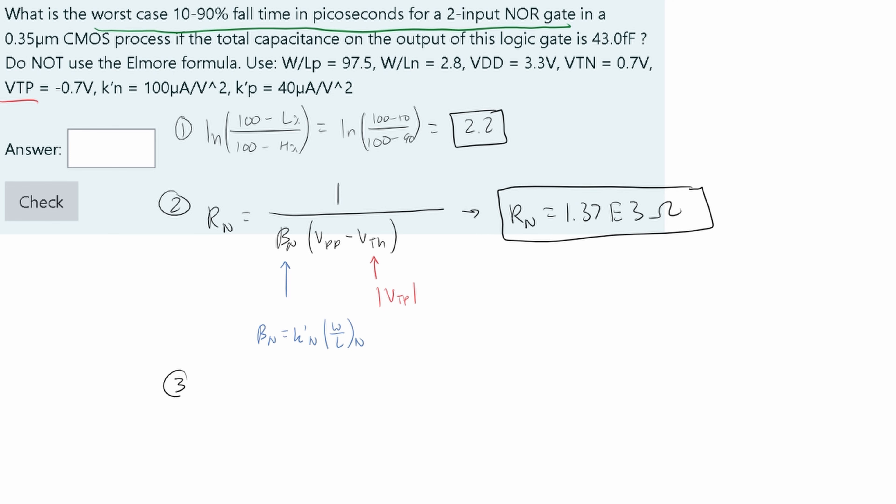Step three is for our TR. TR is just combining everything we've calculated. TR is going to equal the LN we found in step one, multiplied by the RN from step two. This is what the equation says.